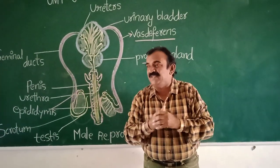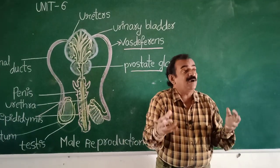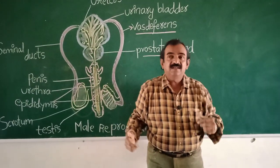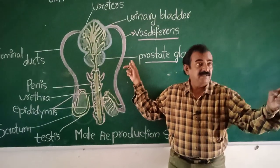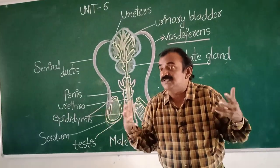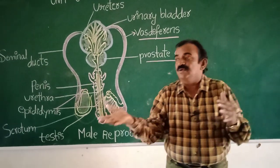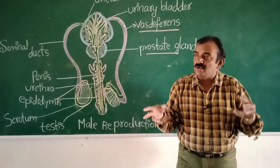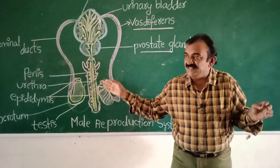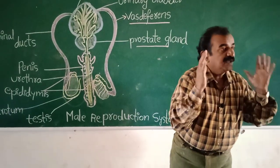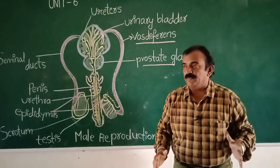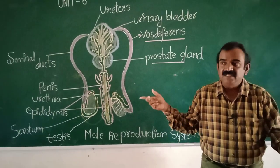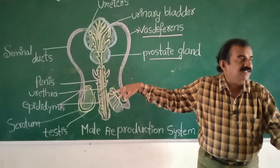Seminal vesicles — two glands — secrete seminal plasma to nourish sperms when outside. Next: the prostate gland — one gland — secretes prostate fluid to provide nourishment to sperms. Next: Cowper's glands — two glands — secrete fluid that neutralizes acidity in the walls of the urethra and helps with the free flow of sperms outside the body. Next: the ejaculatory duct — arising from the seminal vesicles, opening into the vas deferens, forming ducts that open into the urethra.